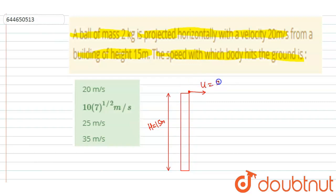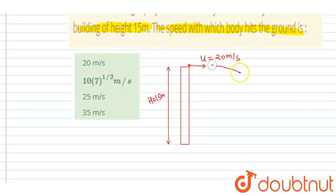So when it will hit the ground, this horizontal velocity will remain unchanged u, and it will gain a velocity in y direction vy.